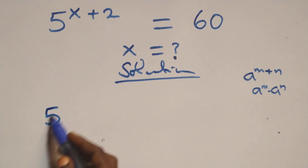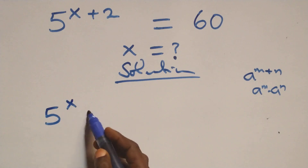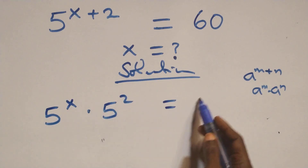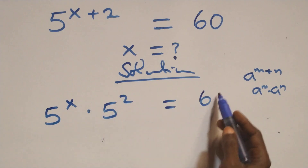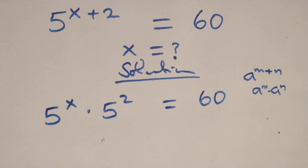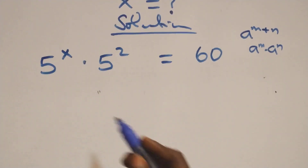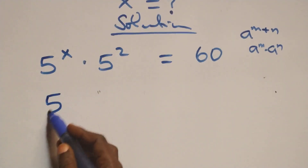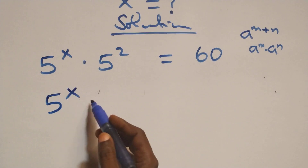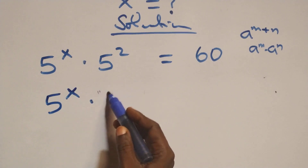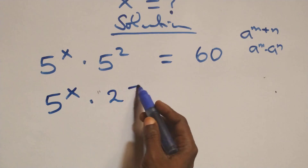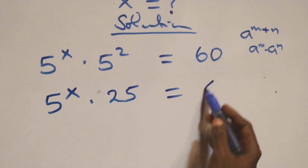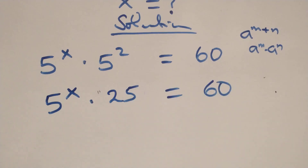Applying this rule, we have 5 raised to power x times 5 squared equals 60. In the next step, 5 squared equals 5 times 5, which is 25, so we have 5 raised to power x times 25 equals 60.